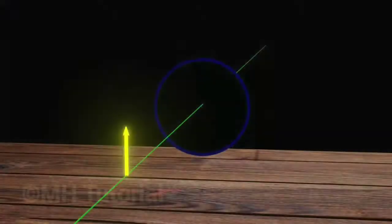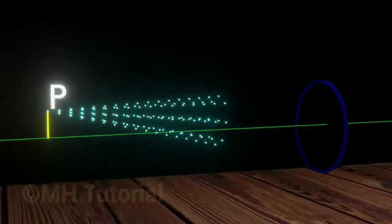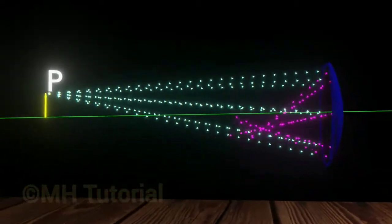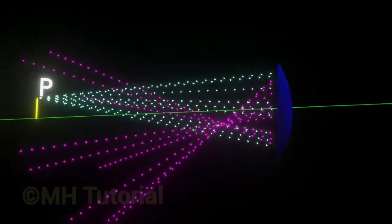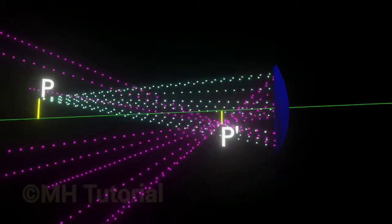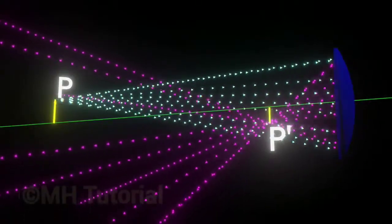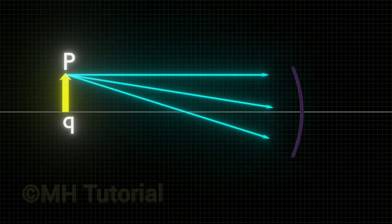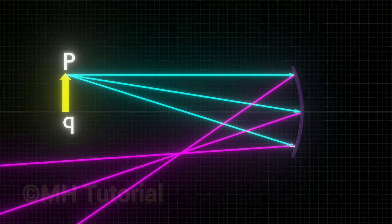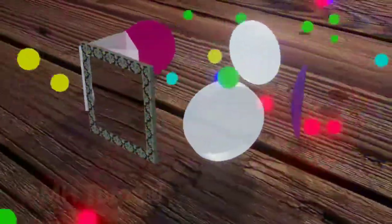Now check out this image formation by a concave mirror. Here the rays of light emitted from the point P are reflected back by the concave mirror. The reflected rays do not diverge here but converge into a point at the P dash point. At that point, an image of the point P will be formed. An inverted image of the entire arrow is formed above the point P dash. So we have realized all types of image formation in 3D animation.